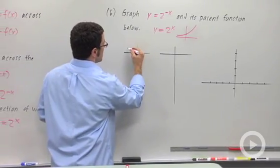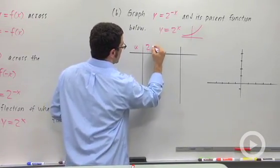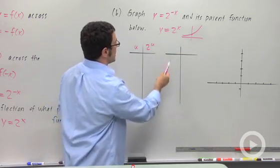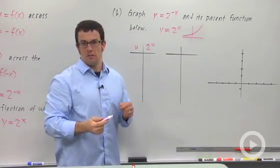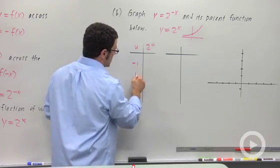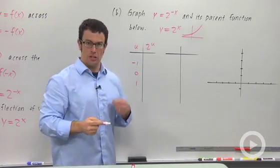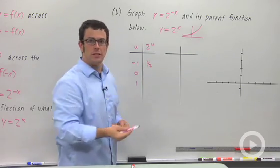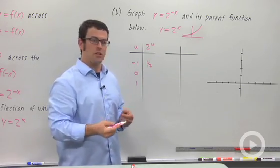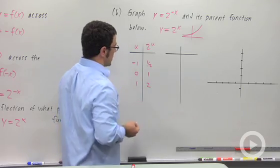Let's plot a few points. So we've got u and 2 to the u. I'm going to change variables to make it easier to transform. And I'm going to pick easy values of u like negative 1, 0, and 1 to evaluate 2 to the u. 2 to the negative 1 is a half, 2 to the 0 is 1, 2 to the 1 is 2. So those are nice and easy.